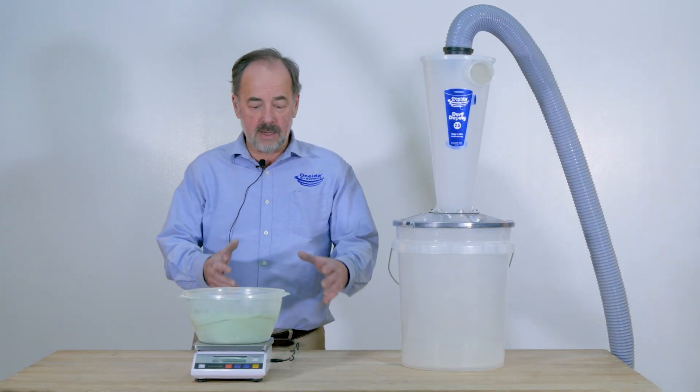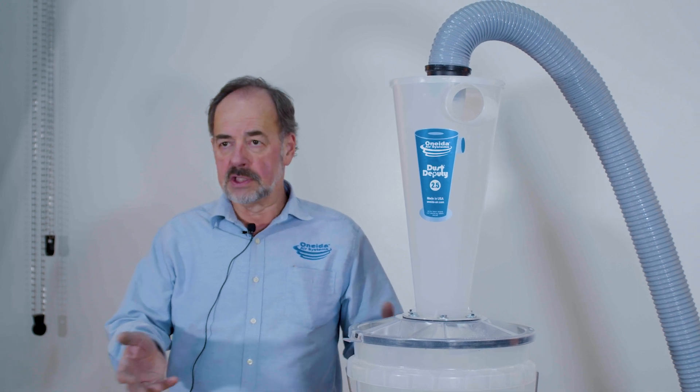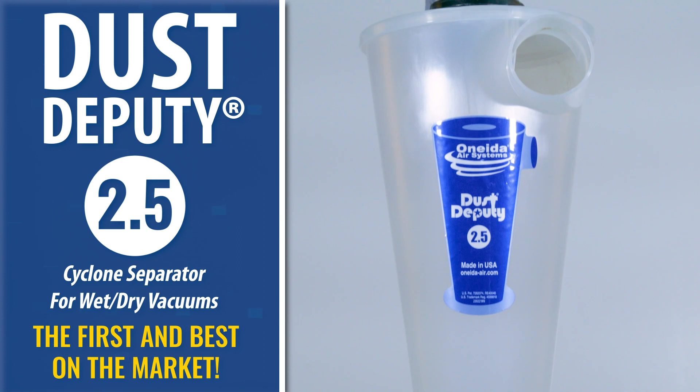Today we'll be talking about how we measure separation efficiency on various systems. This particular system is our Dust Update 2.5, the latest version of our compact cyclone.